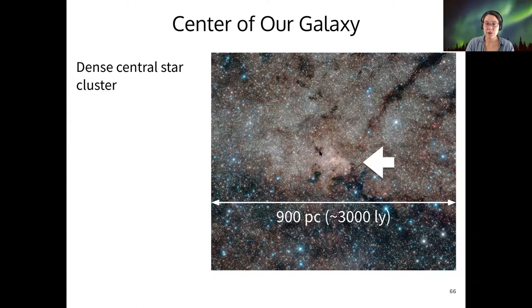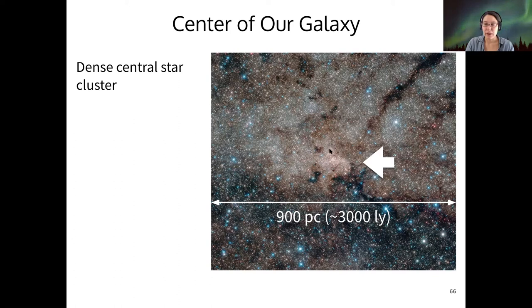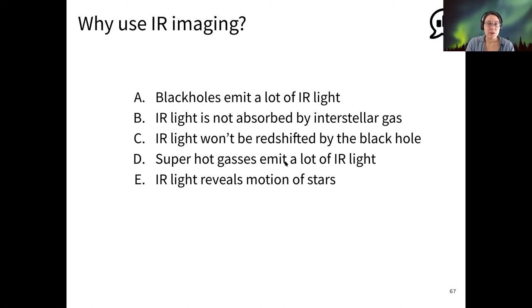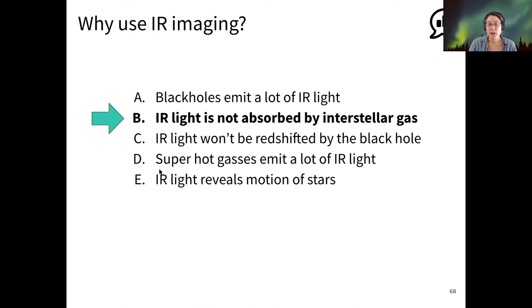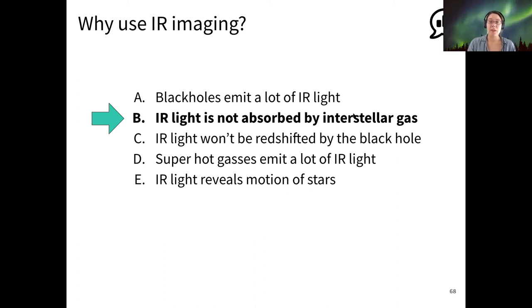Coming back to our dense central star cluster — what does dense mean? We'll answer that in a second. We're looking in the infrared in this particular image. I just showed you a bunch of different wavelength ranges, infrared and X-ray. So why do we use infrared imaging to look at the galactic center? It's because the infrared light is not absorbed by the interstellar gas. Infrared light can also reveal the motion of stars near galactic center, which is the reason we look in the infrared — we would like to see what's happening in that dense cluster of stars, but we cannot use visible light because it would be absorbed by interstellar gas and dust.